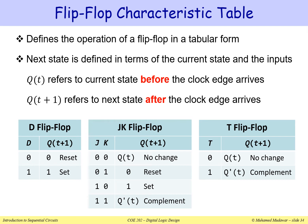Flip-flops can be described with a characteristic table. For the D flip-flop: Q(T+1) = D. If D=0, Q(T+1)=0 (reset); if D=1, Q(T+1)=1 (set). For the JK flip-flop, there are four input combinations: J=0,K=0 → no change, Q(T+1)=Q(T); J=0,K=1 → reset, Q(T+1)=0; J=1,K=0 → set, Q(T+1)=1; J=1,K=1 → toggle, Q(T+1)=Q'(T).